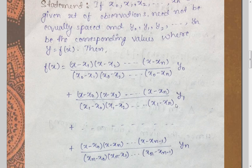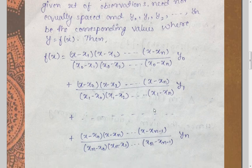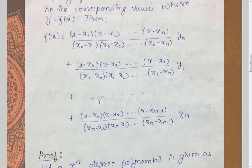Similarly for y₁, we have x₁ in front, and while computing for y₁ we will have x₁ missing. So on the top we have started from x minus x₀, skipped x minus x₁, and jumped to x minus x₂, continuing up to xₙ. Similarly, the denominator has x₁ in it and x₁ minus x₁ is missing. This is the pattern in the Lagrange interpolation formula.